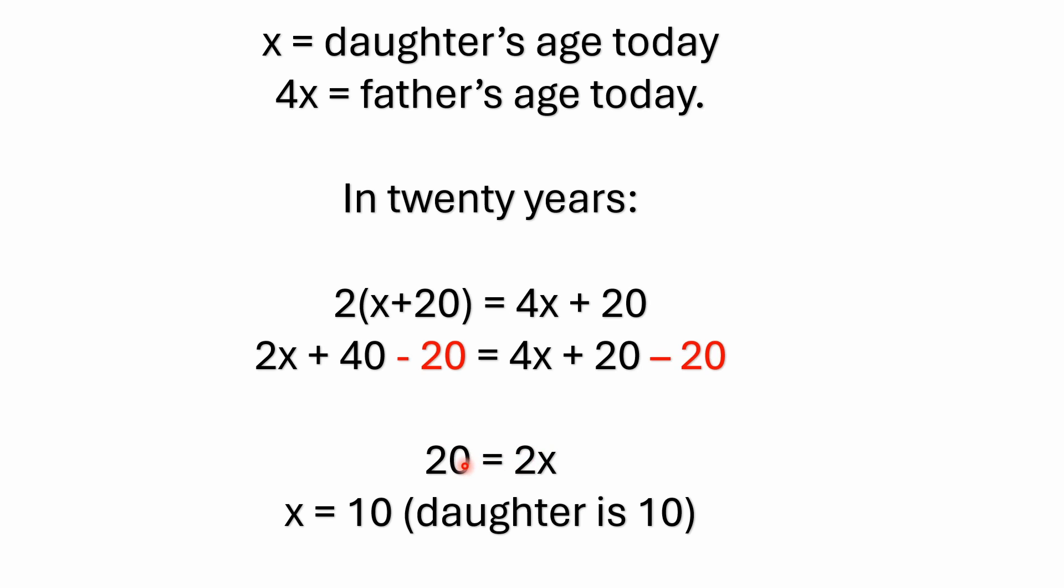Well, if you divide both sides by 2, you're going to end up with X equals 10, which tells us we remember we said that X is the daughter's age today. So X equals 10, that would be the daughter's age.